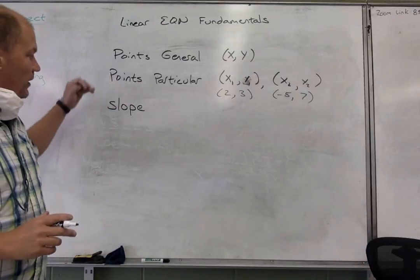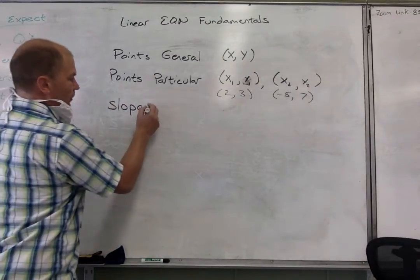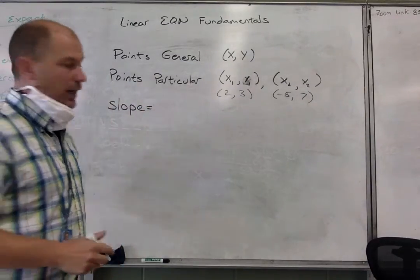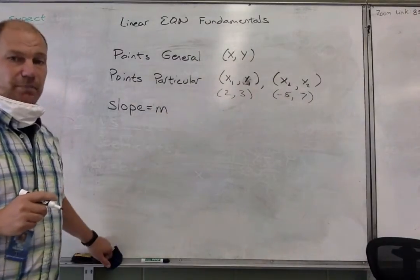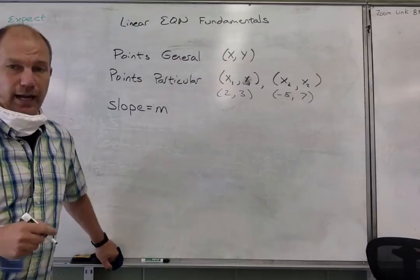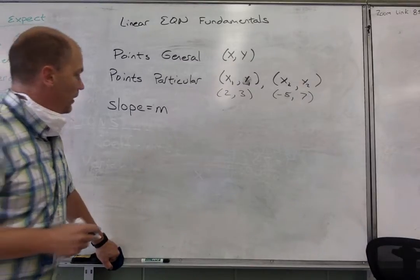And then when we talk about slope, we'll refer to it in one of two ways. The first way will be that we just happen to know the slope, and we're going to call that m. That's typically what we do in America.